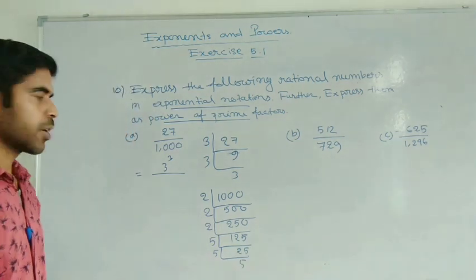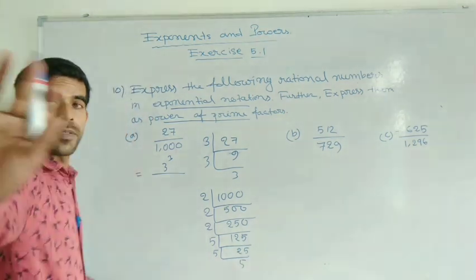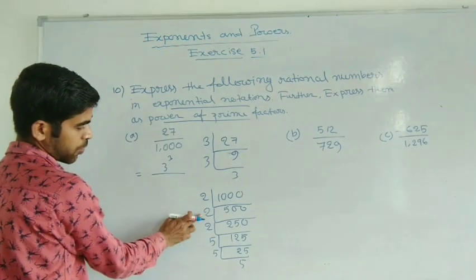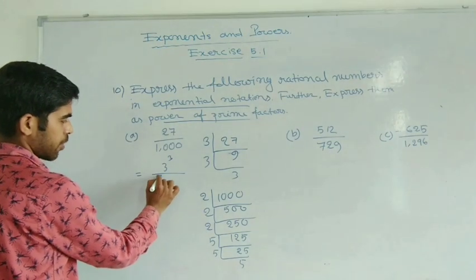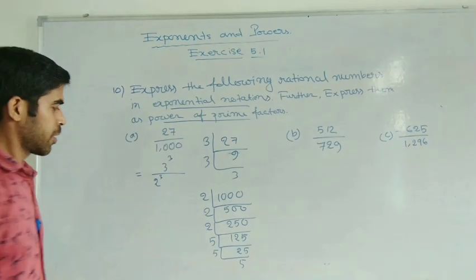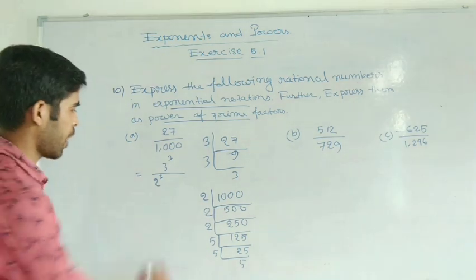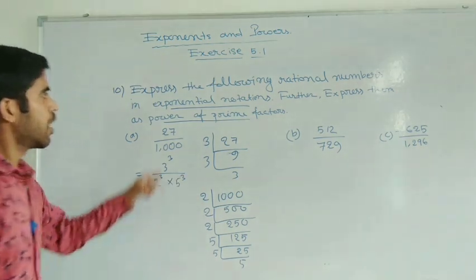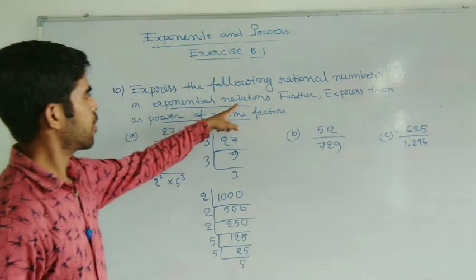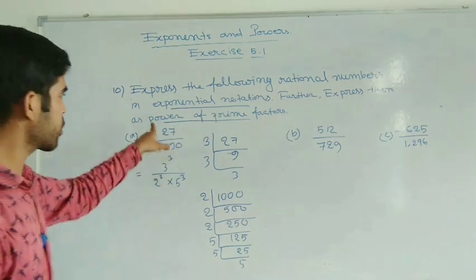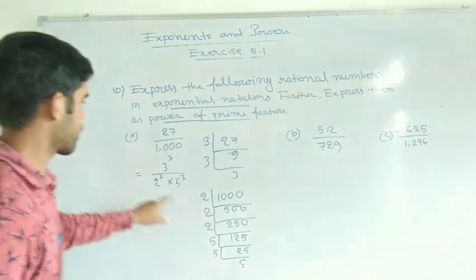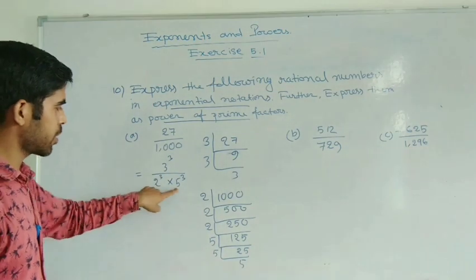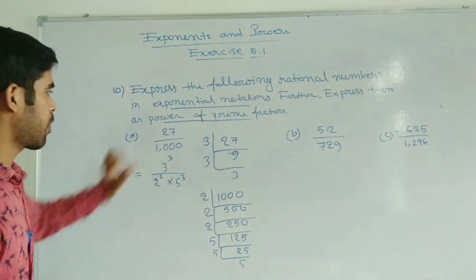So here 2 appears three times — write 2 to the power 3. And from 5, there are three here. This gives exponential notation and powers of prime factors. You can see there are five numbers — for this two, five, and three, the power is here.